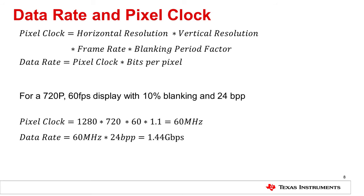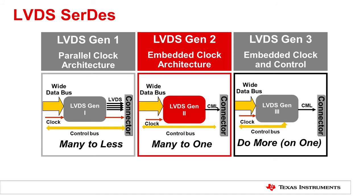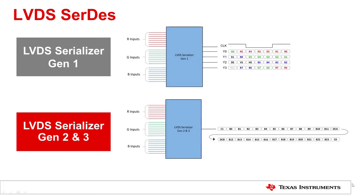In many display systems, serializers and deserializers are used to transmit signals between the processor and display panels to reduce cable count. TI, with leading serialization and deserialization technologies, offers three generations of LVDS serializer and deserializer suitable for different display applications. Gen 1 LVDS SerDes can serialize 24 bits of data into 5 lanes and deserialize the data back to 24 bits. Gen 2 and Gen 3 LVDS SerDes can serialize 24 bits of data into 1 lane and deserialize the data back to 24 bits.